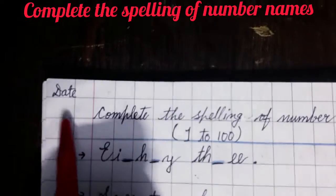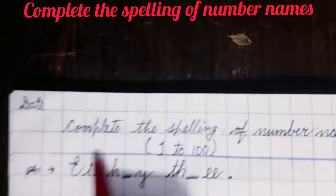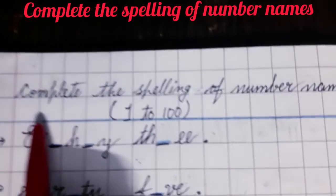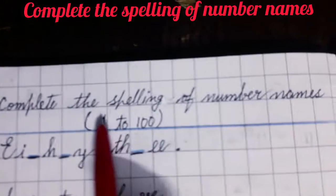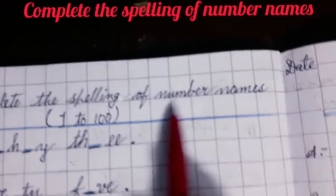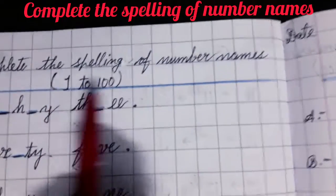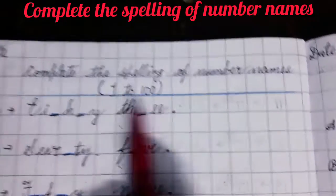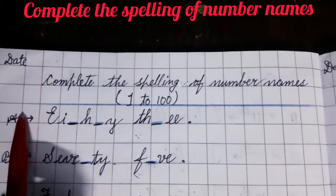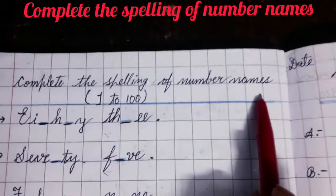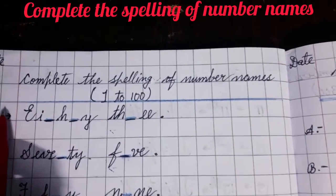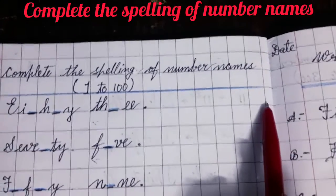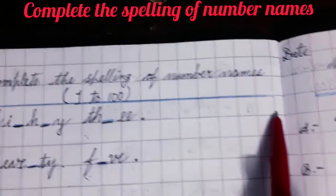Firstly, you will write down the date here in this corner. Then you will write today's heading: 'Complete the spelling of number names from 1 to 100.' And after writing this heading, you will draw an underline here with blue marker pencil.